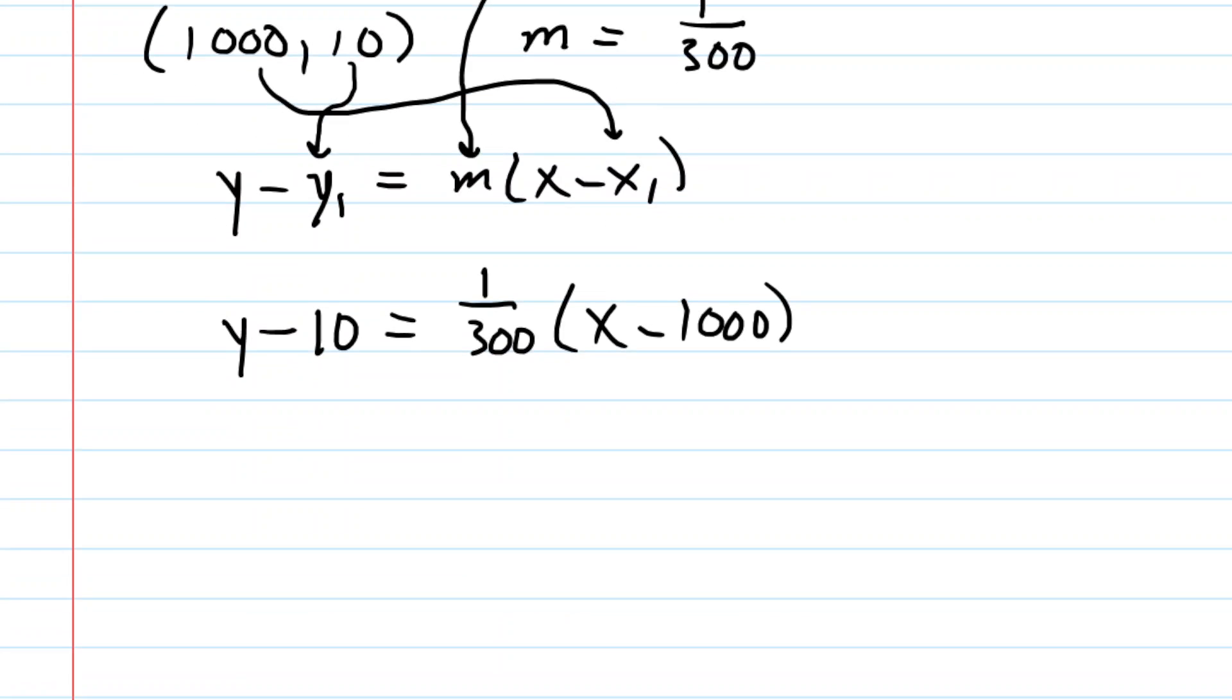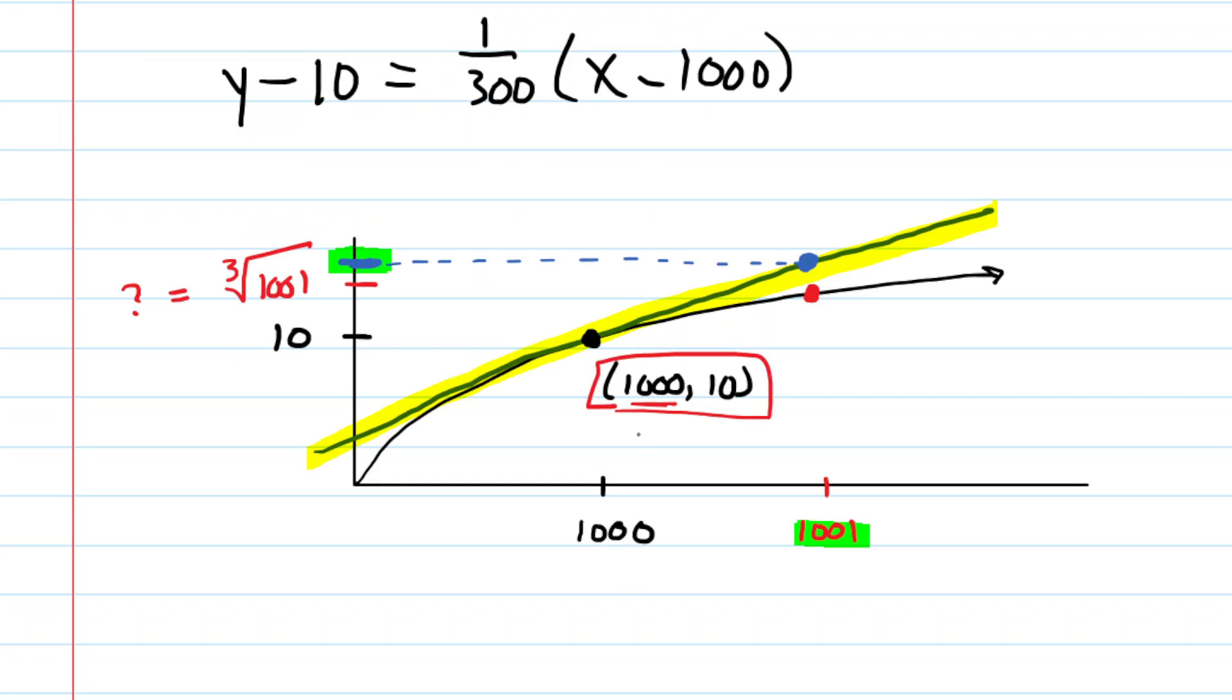So let's juxtapose the graph next to this equation to solidify our understanding. Now remember, the key insight was to take the 1,001 and rather than plugging it into the function, we're going to instead plug it into the tangent line equation. So you're now taking this 1,001 and plugging it in right there. And that's going to give you the y value of that blue point, that point on the tangent line. And that y value is so close to the cube root of 1,001 that it will serve as a good estimate.